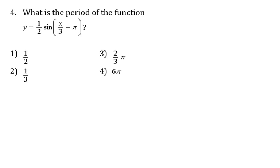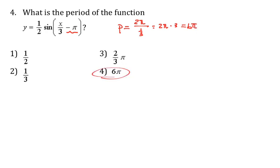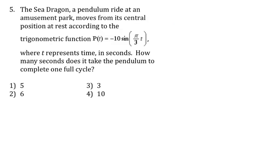Number 4: what is the period? Even though we have minus π, that doesn't matter. The coefficient of x is 1/3, so the period = 2π divided by (1/3), which equals 2π times 3, giving us 6π. So 6π is our answer for number 4.